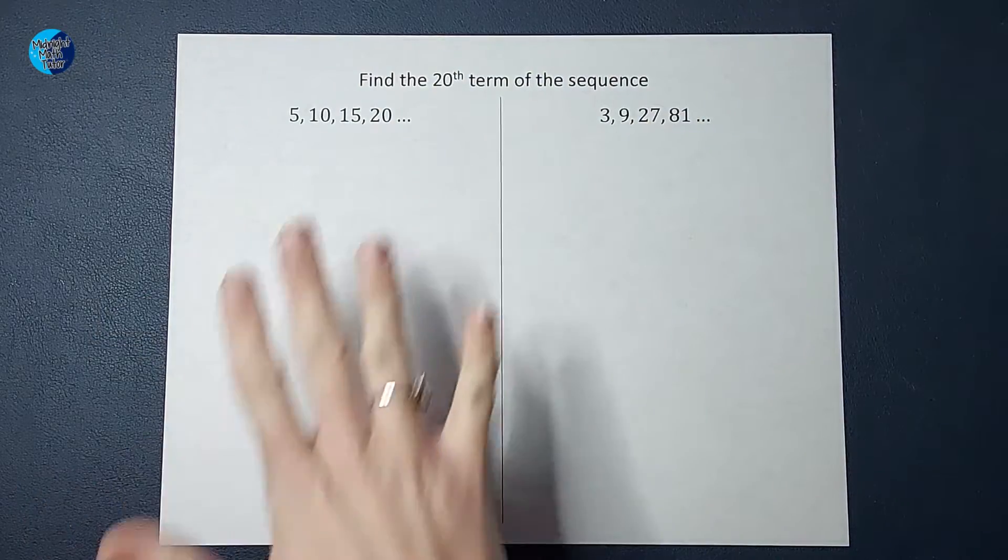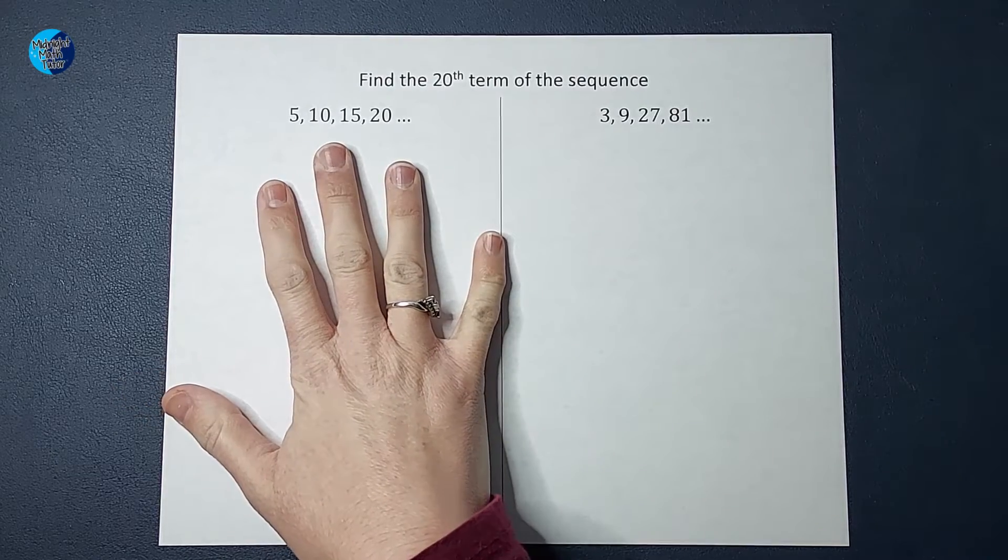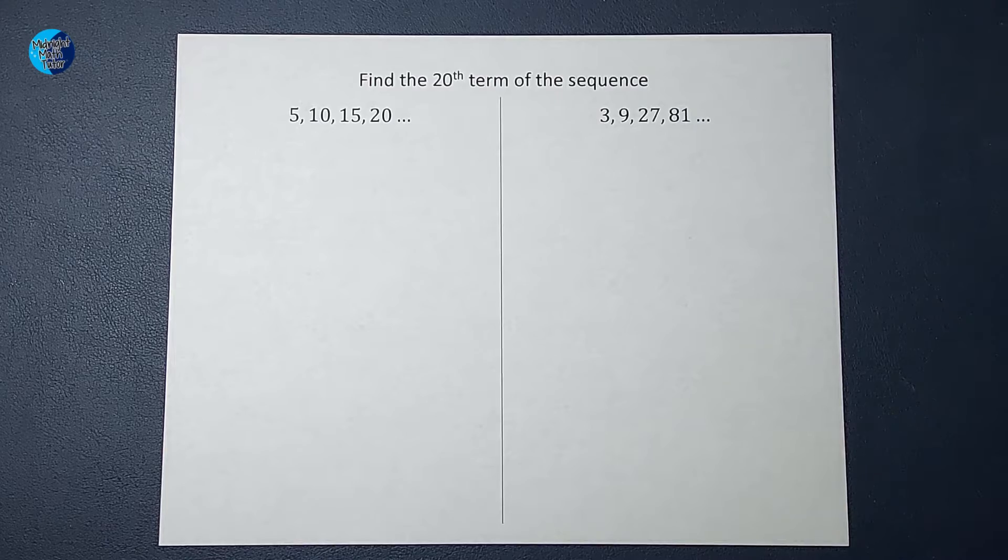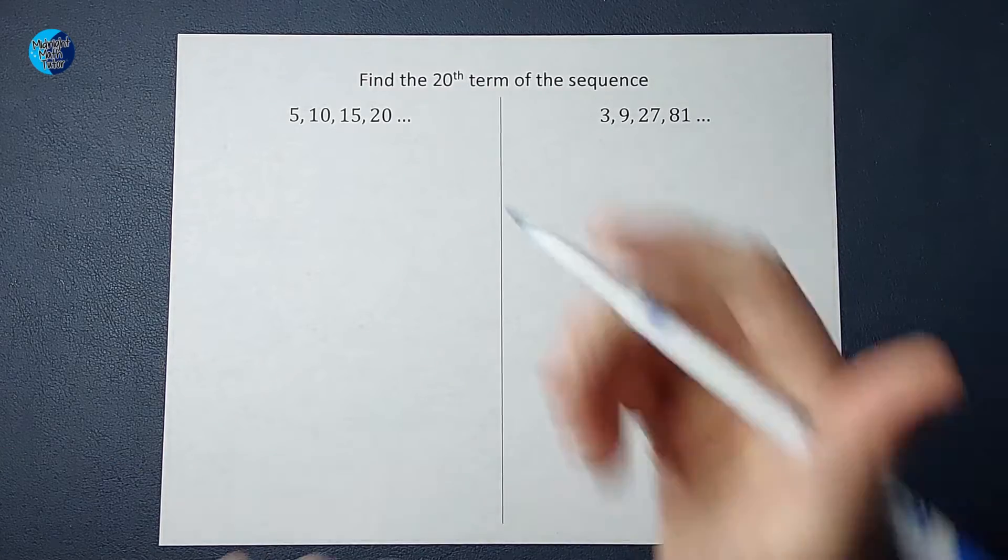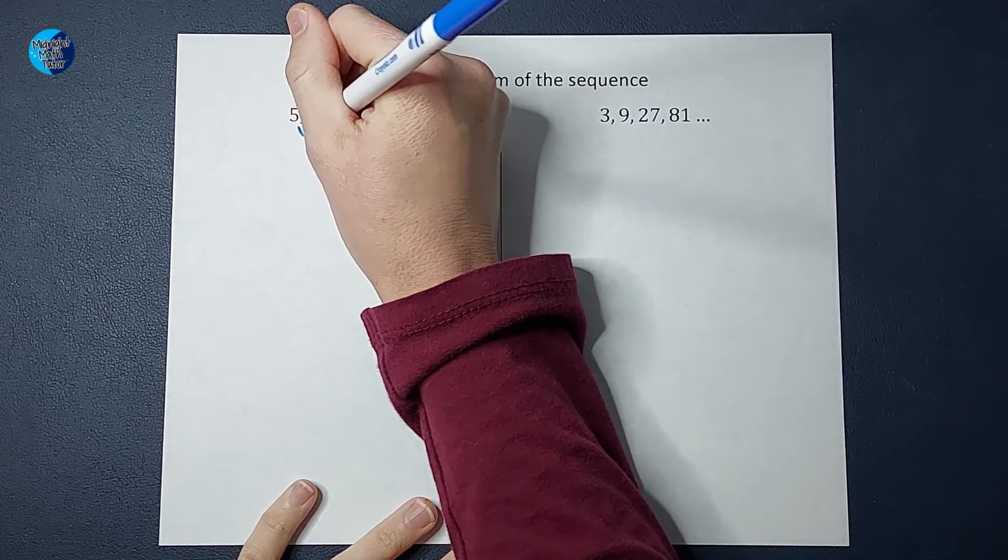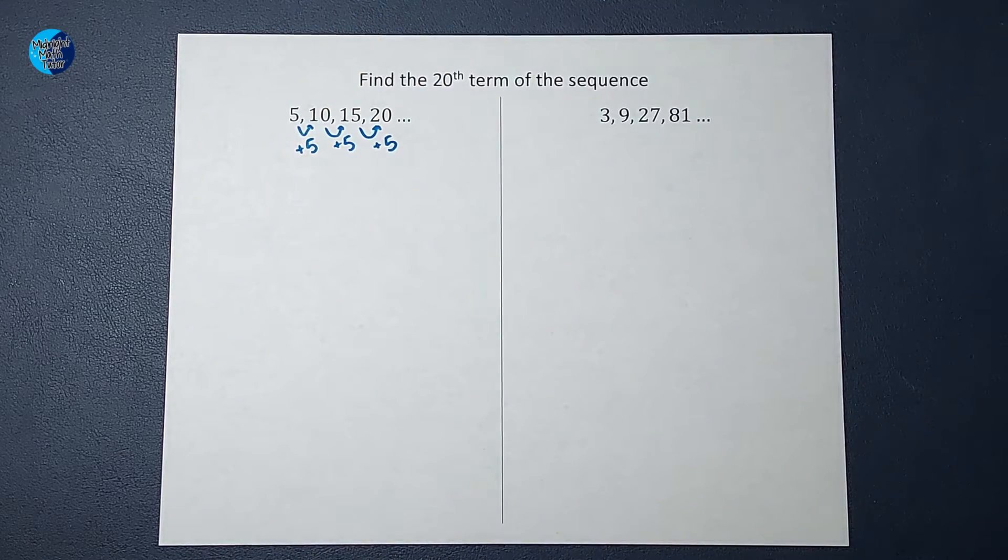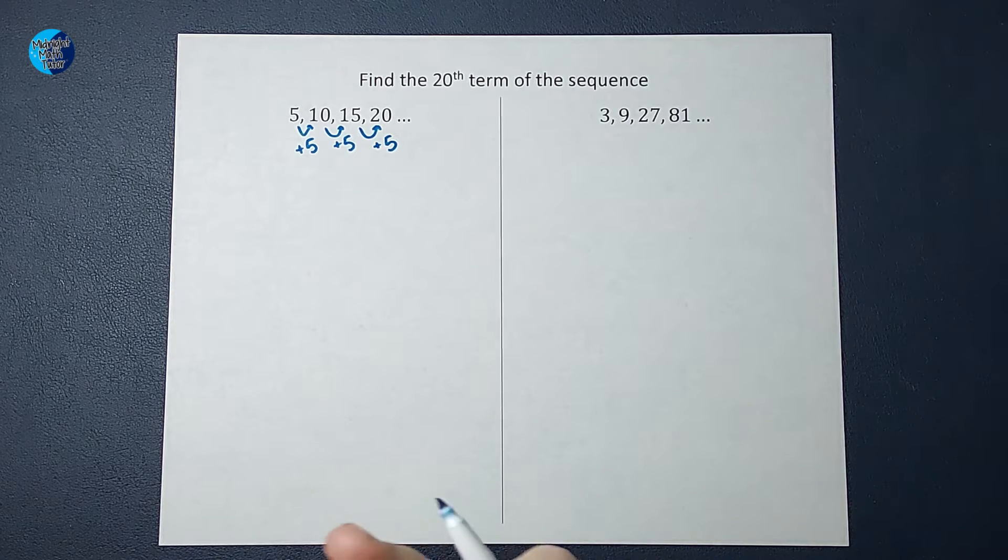So I want to find the 20th term in this sequence. First of all, we need to know what the pattern is. So what is happening each time? Well, we are adding five each time. So that tells me that this is an arithmetic sequence.